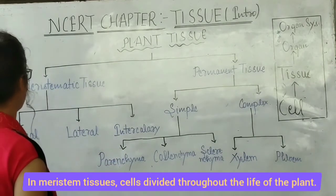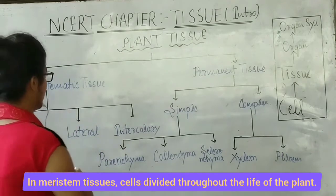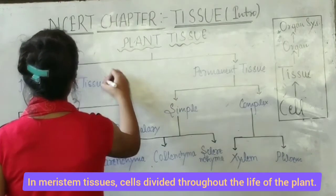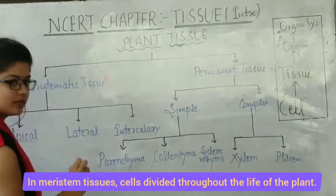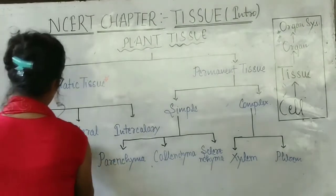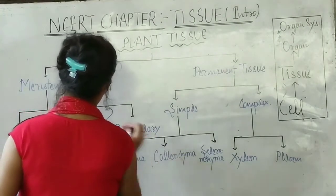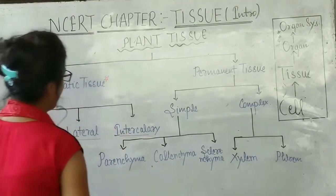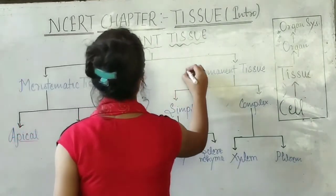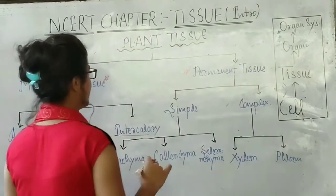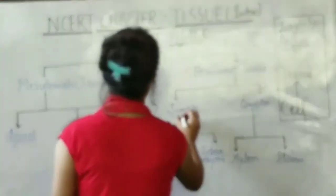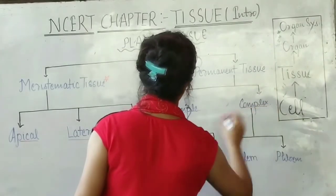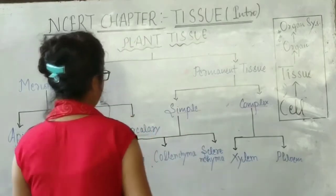Meristematic tissue is of three types: apical, lateral, and intercalary. The other main type is permanent tissue, which is differentiated into simple and complex. This is a very important chart that you have to learn.